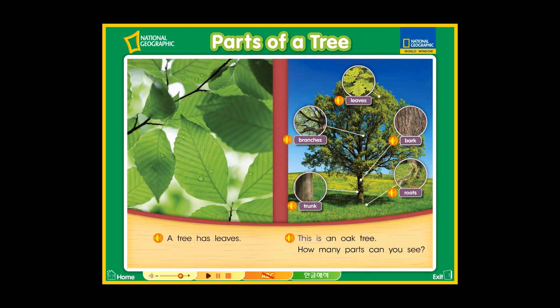This is an oak tree. How many parts can you see? Leaves, branches, bark, trunk, roots.